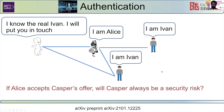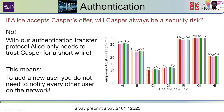So what can we do? Taking inspiration from peer-to-peer protocols, we can use a mutual friend. Say Casper says, I know the real Ivan, I will put you in touch. But if Alice accepts Casper's offer and uses Casper as a trusted node, is there a way to prevent Casper from always being a security risk? Because if you trust Casper once and Casper ends up being dishonest, there's nothing that can save you. The answer is: we have an authentication transfer protocol such that Alice needs to trust Casper only for a short amount of time.